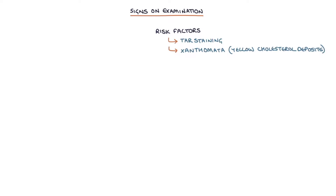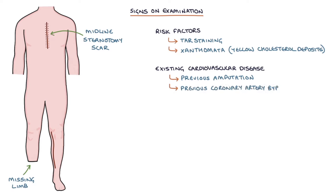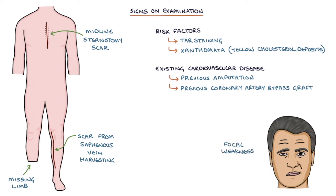You can look for signs of existing cardiovascular disease, such as missing limbs or digits after previous amputations for critical limb ischemia, a midline sternotomy scar indicating a previous coronary artery bypass graft, a scar on the inner calf for saphenous vein harvesting, which may also indicate a previous CABG, and focal weakness, which may suggest a previous stroke.